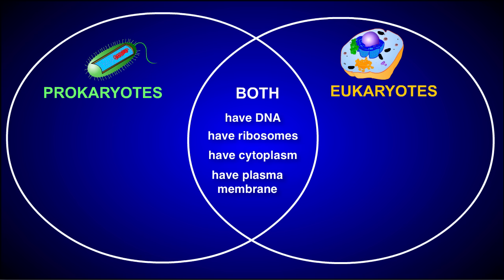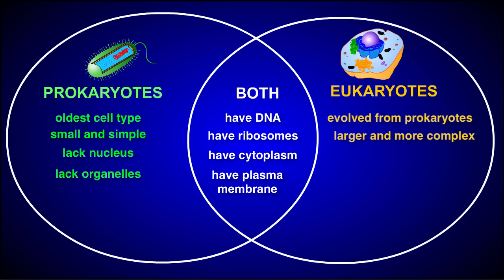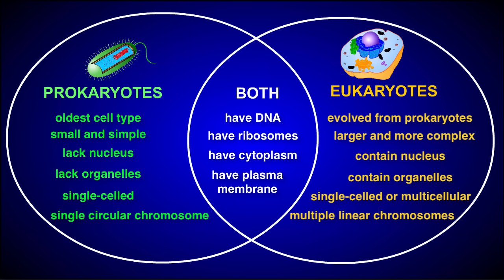Now let's look at some of the ways they differ. Prokaryotic cells are the oldest type of cell — they're small and relatively simple. Eukaryotic cells evolved from prokaryotic cells later; they're larger and much more complex internally. Prokaryotes lack both a nucleus and membrane-bound organelles, while eukaryotic cells have a nucleus and also contain organelles. Prokaryotes are single-celled organisms, while eukaryotes can be either single-celled or multicellular. Finally, the DNA of a prokaryote is usually organized as a single circular chromosome, while the DNA of a eukaryote is organized as linear chromosomes.